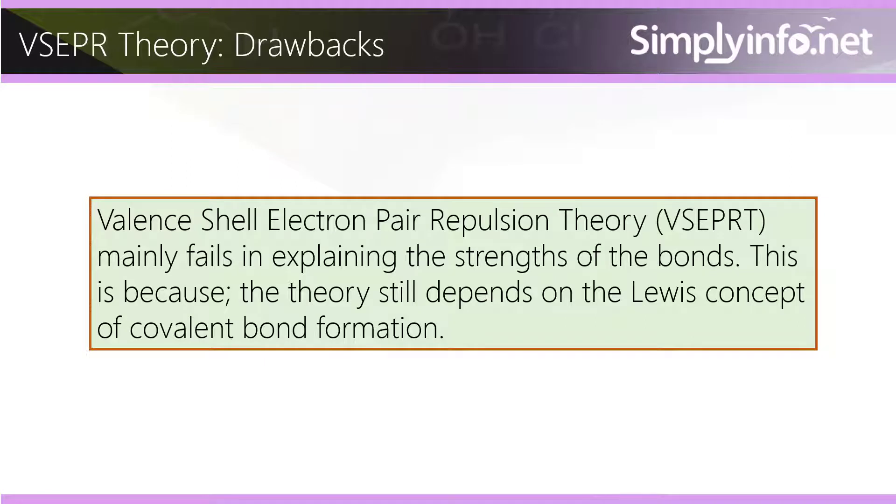VSEPR Theory Drawbacks: Valence Shell Electron Pair Repulsion Theory mainly fails in explaining the strength of bonds. This is because the theory still depends on the Lewis concept of covalent bond formation.